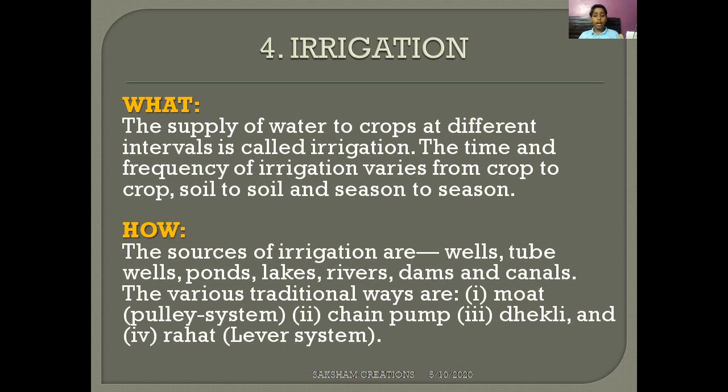The various traditional ways of irrigation are: first is the moat, which is a pulley system; second is the chain pump; third is the dhekli; and fourth is the rahat, which is a lever system.